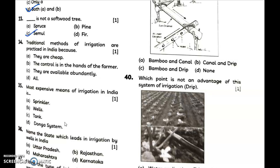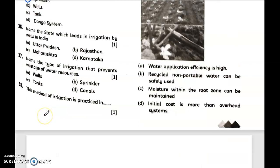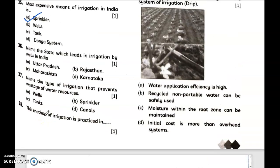Traditional methods of irrigation are practiced in India because... D, all. Most expensive means of irrigation in India is A, sprinkler. Name the state which leads in irrigation by wells in India - answer is option A, Uttar Pradesh. Name the type of irrigation that prevents wastage of water resources - answer is B, sprinkler. In case it was drip, then you should take drip. Drip irrigation, this method of irrigation is practiced in...